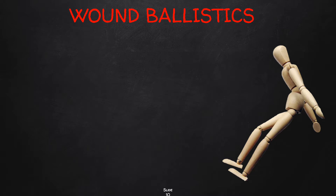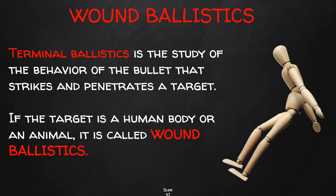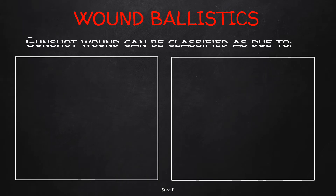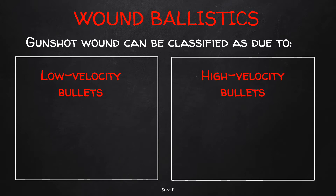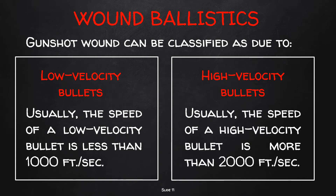Terminal ballistics is the study of the behavior of a bullet that strikes and penetrates a target. If the target is a human body or an animal, it is called wound ballistics. Gunshot wounds can be classified as due to low-velocity bullets, which have a speed less than 1,000 feet per second, or high-velocity bullets, which have a velocity greater than 2,000 feet per second.